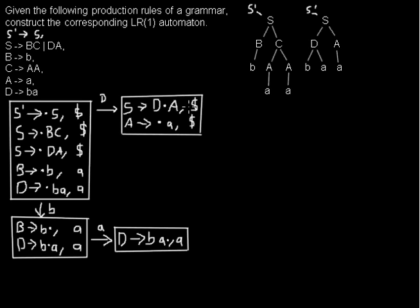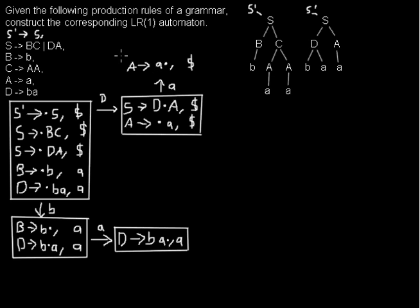Now we're done with that state. The next possibility from here is reading an 'a', so I draw another state where we read terminal 'a' and move the dot over it. We keep the dollar lookahead, and there's nothing left to add.